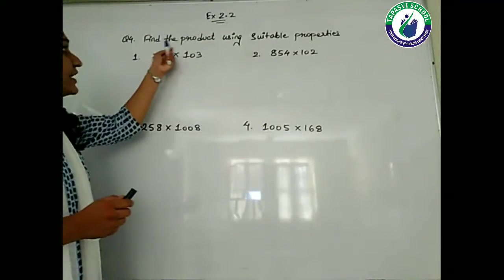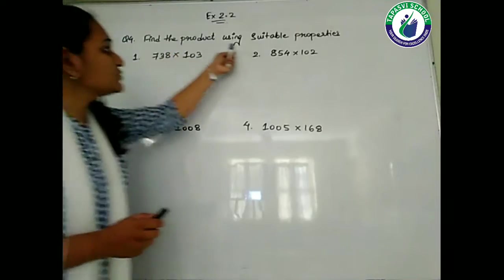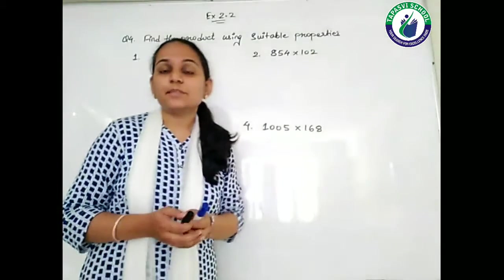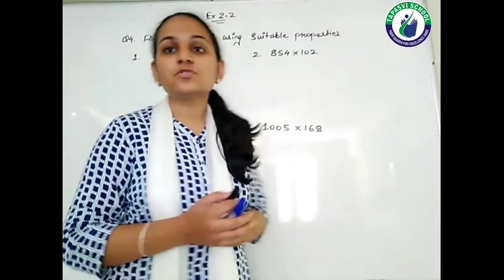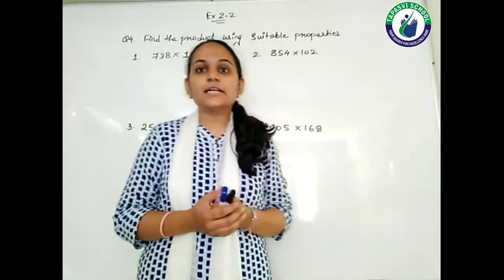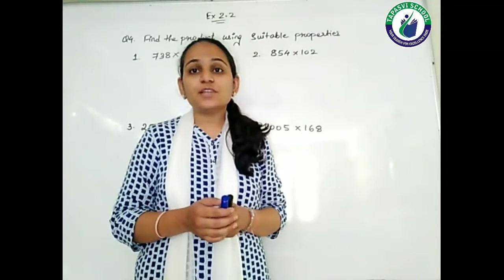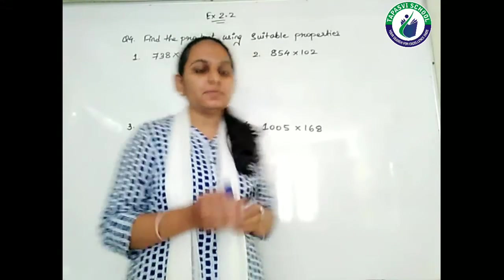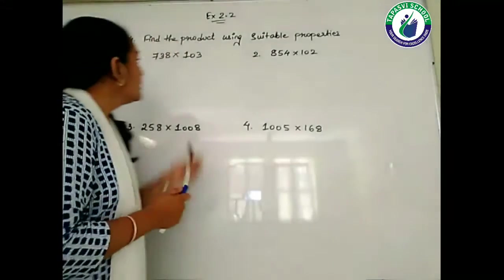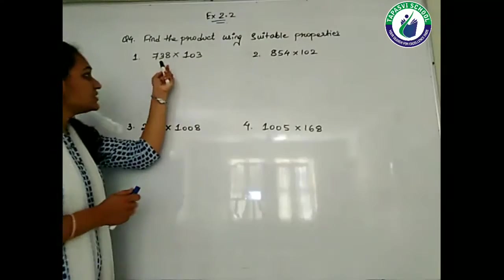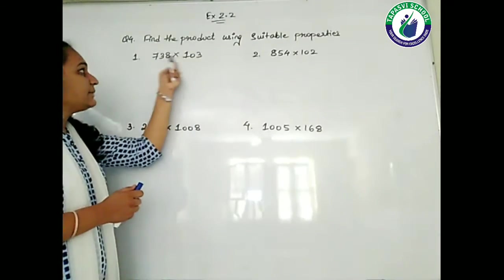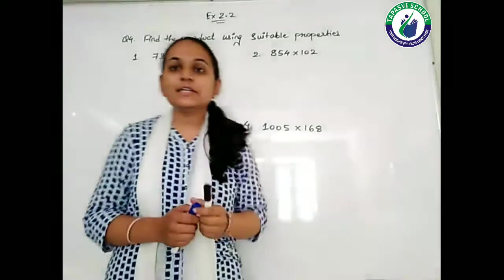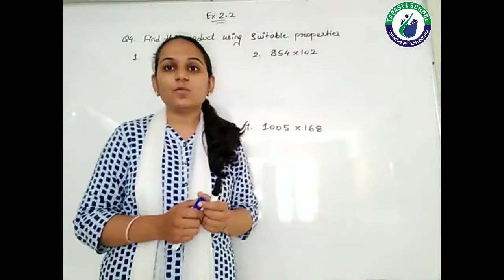The question is: find the product using suitable properties. So students, what we are supposed to do — the first question is 738 multiplied by 103.